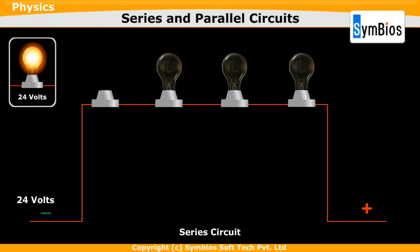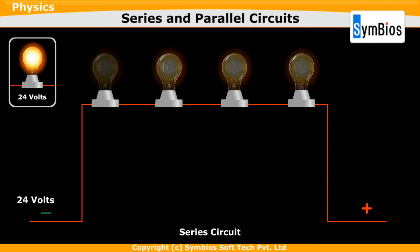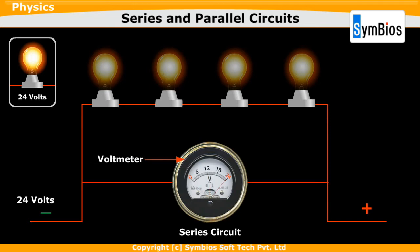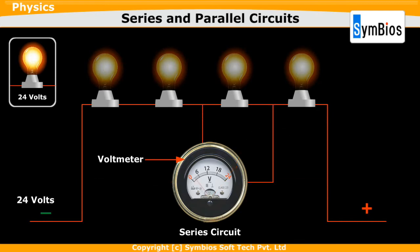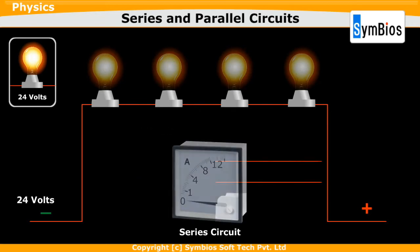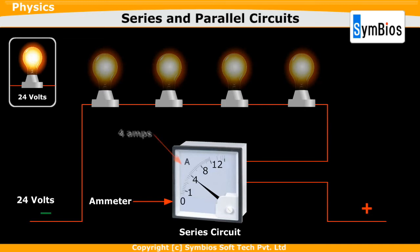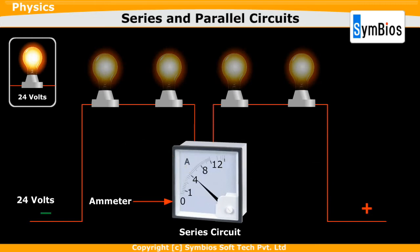If we remove a bulb from this circuit, all the bulbs will go off. Let us connect a voltmeter across the circuit. We can find that the reading is 24V. Now let us connect the voltmeter across each of the bulbs. We can find that the voltage across each bulb is 6V. Now we will see what happens when we connect an ammeter to a series circuit. We find that the reading is 4A. Even when we connect this ammeter across each of the bulbs, the ammeter reading remains the same, i.e. 4A.